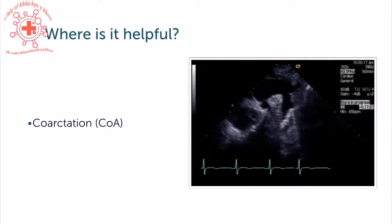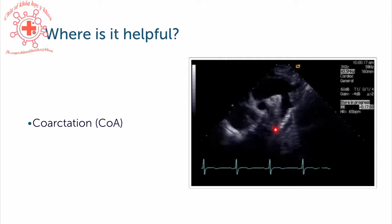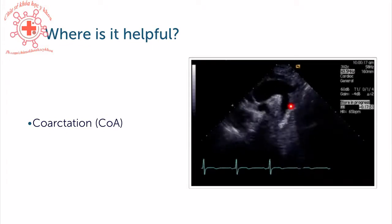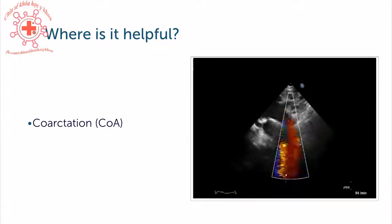Here are some indications where you should use the suprasternal view. In the detection of coarctation, we can nicely appreciate the descending part where the narrowing of the aorta is present. In this specific case, we also have dilatation of the aortic arch and a very distal origin of the left subclavian artery. Here is color flow of a patient with coarctation — you can see turbulent flow at the site of obstruction. We'll talk more about that in the chapter on congenital heart disease.